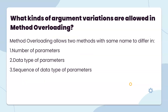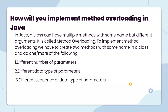What kind of argument variations are allowed in method overloading? Mainly three types of variation are allowed: number of parameters, data type of parameters, and sequence of data types. These are the three types.